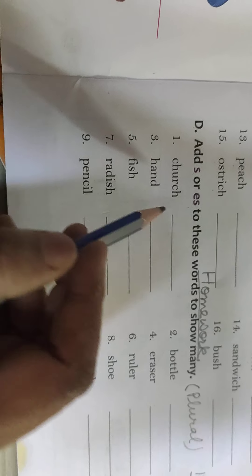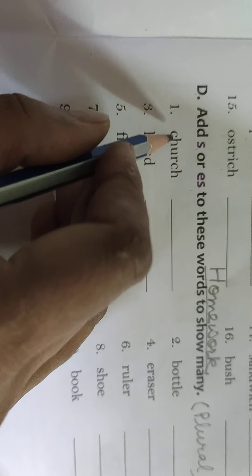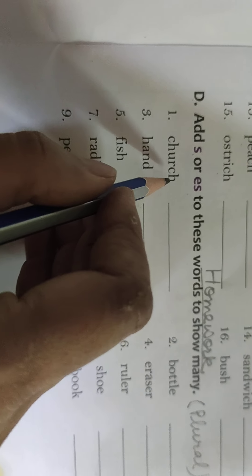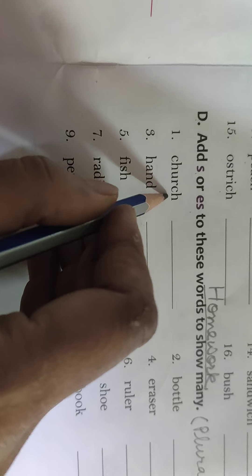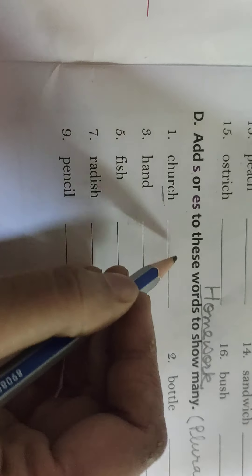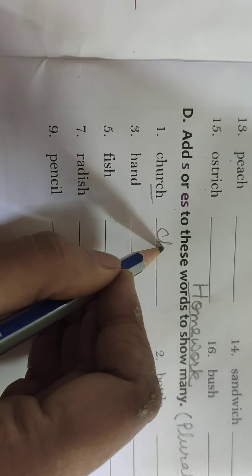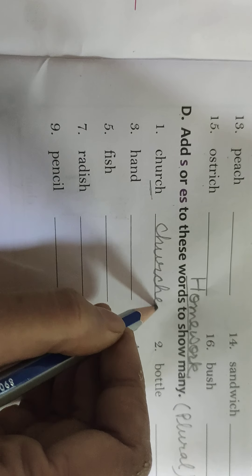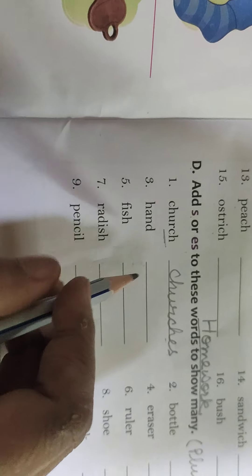Now look at this. This is CH U R CH. It ends with the letter CH. So here we will use ES. Churches. ES. Churches.